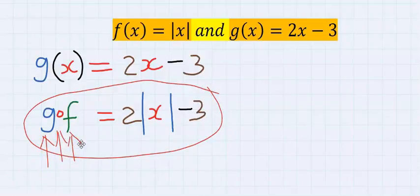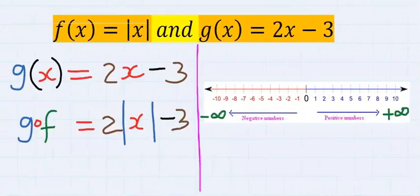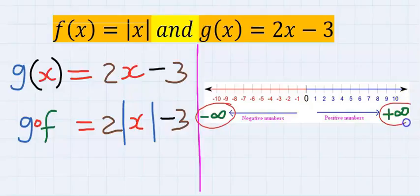Step number four: consider the number line and all the values towards negative infinity and all the positive numbers towards positive infinity into G composite F. For the value of x including zero, you can see that the presence of absolute value or modulus function will never allow negative.